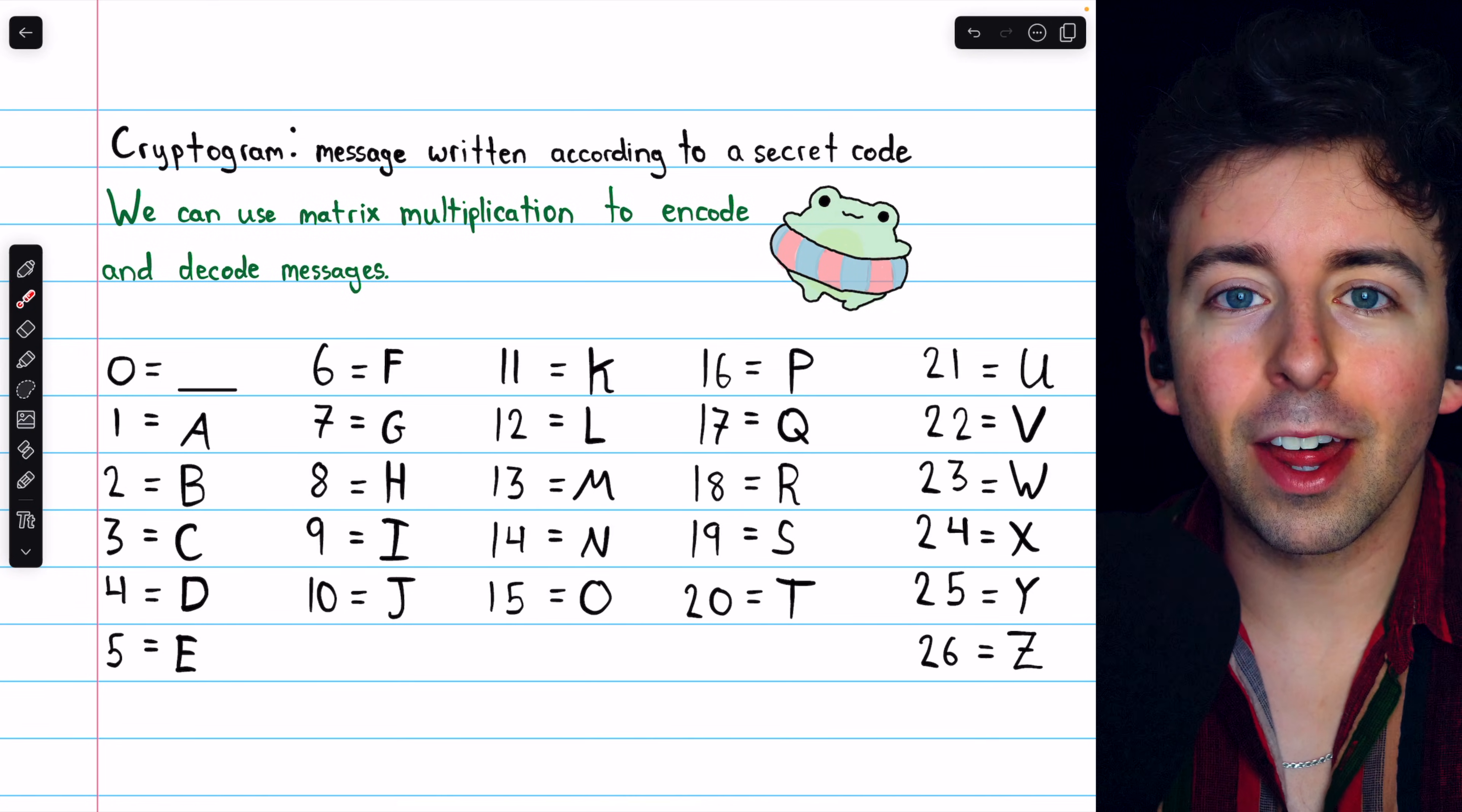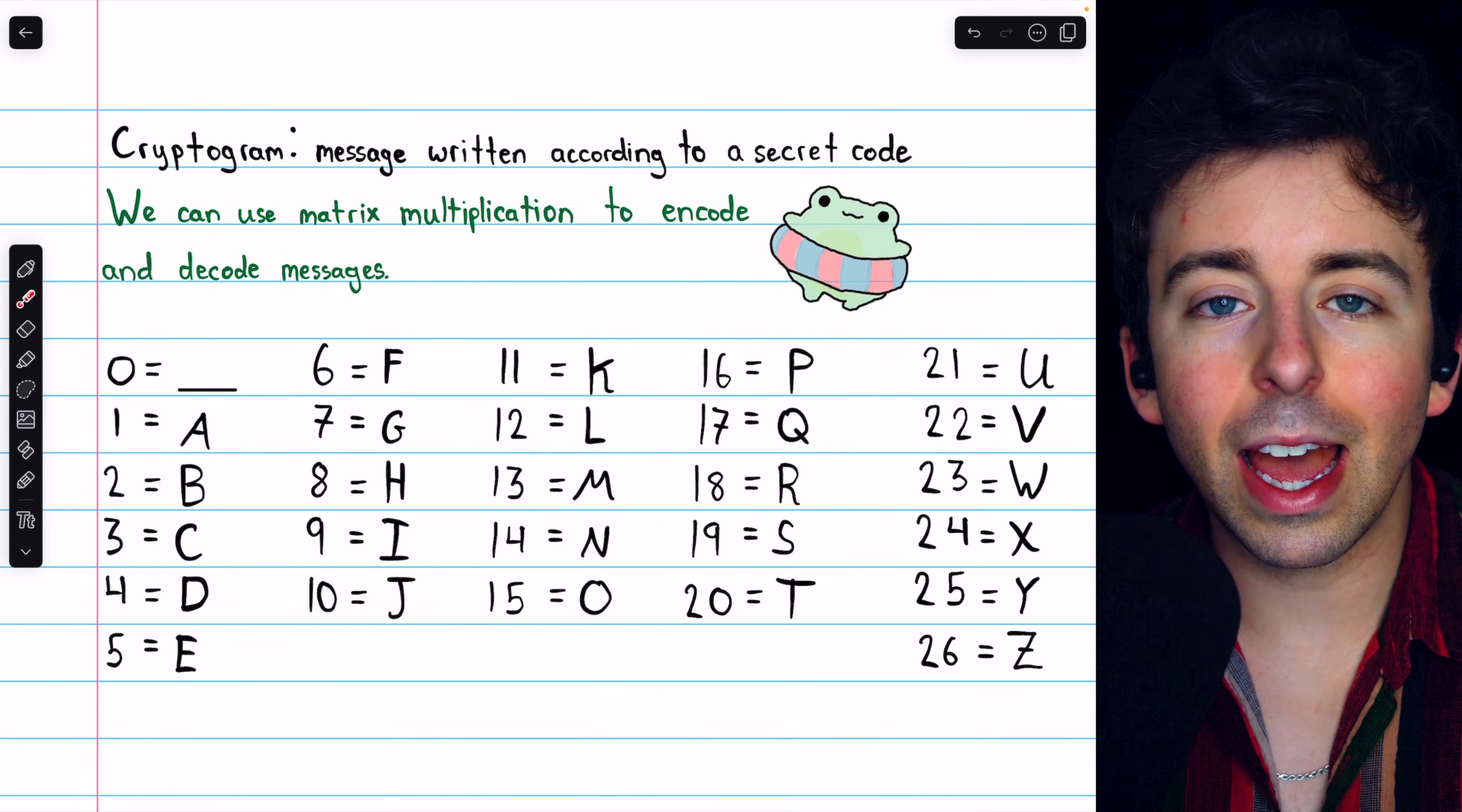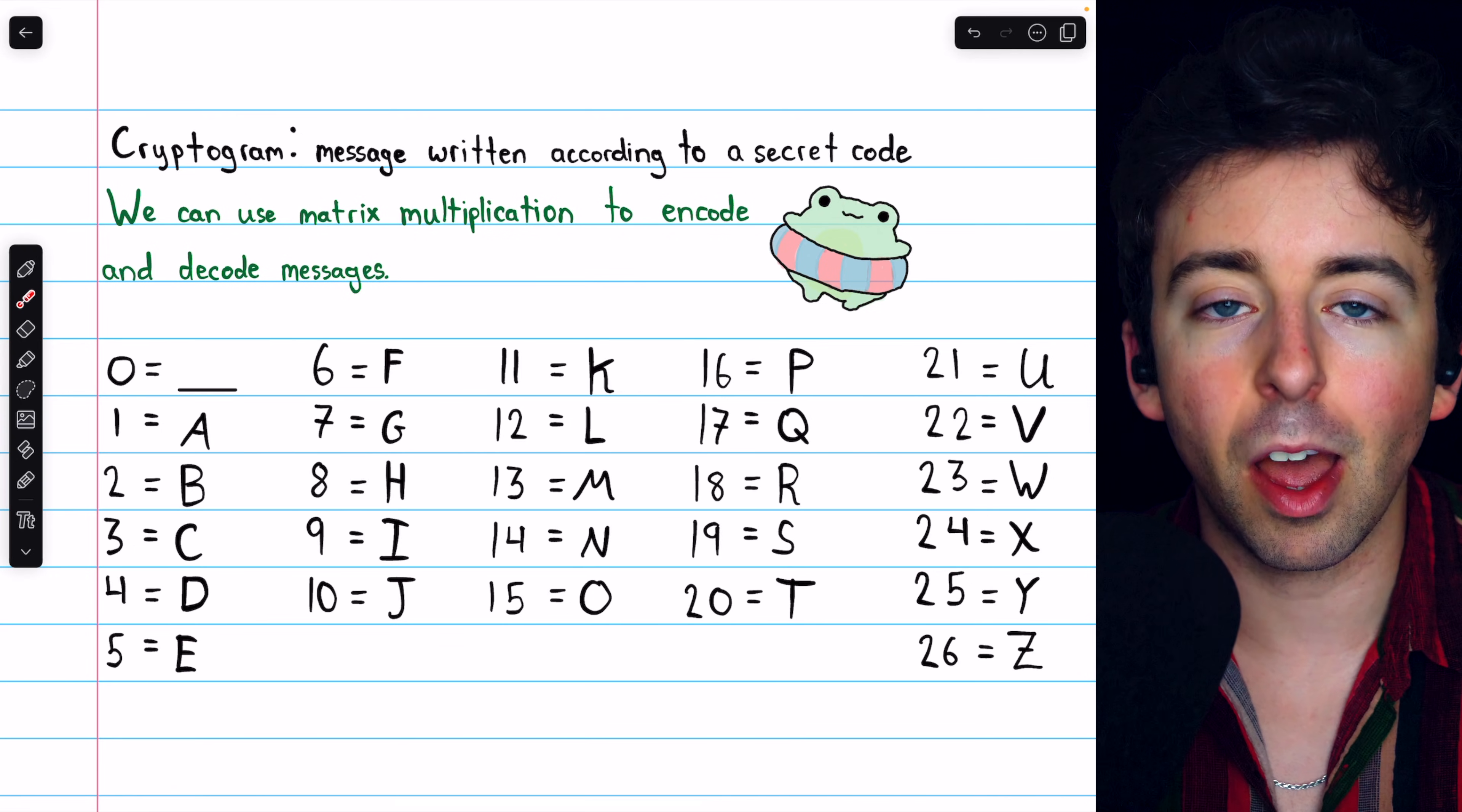Linear algebra, like most mathematics, is surprisingly useful. One interesting application of linear algebra is cryptography, and with the knowledge we have about matrices up to this point, Gauss-Jordan elimination, inverting matrices, and matrix multiplication, that's enough to encode and decode simple messages with matrix operations.